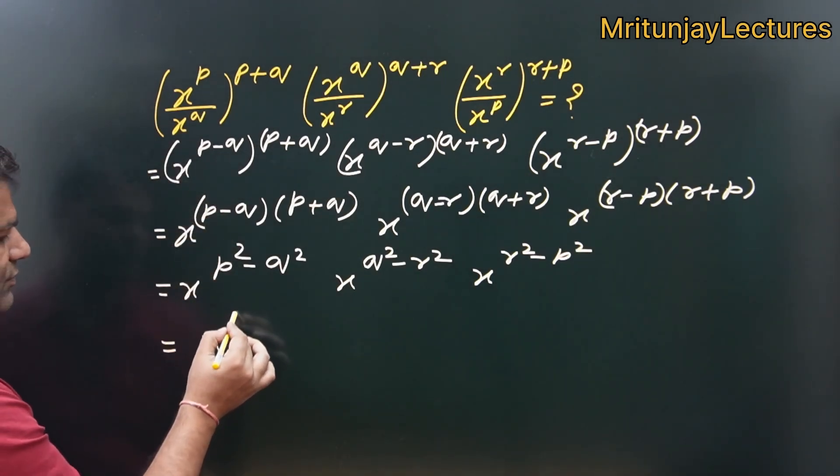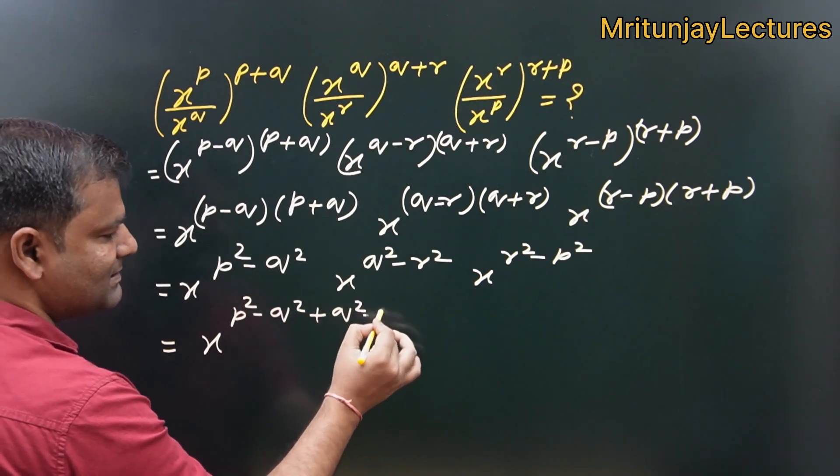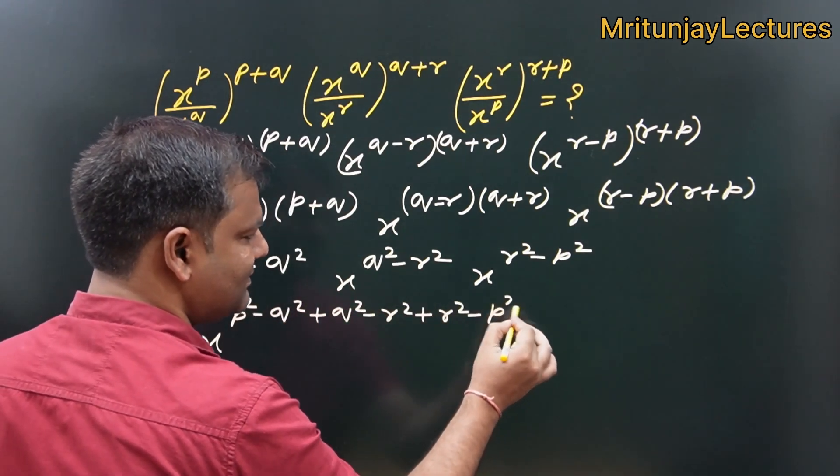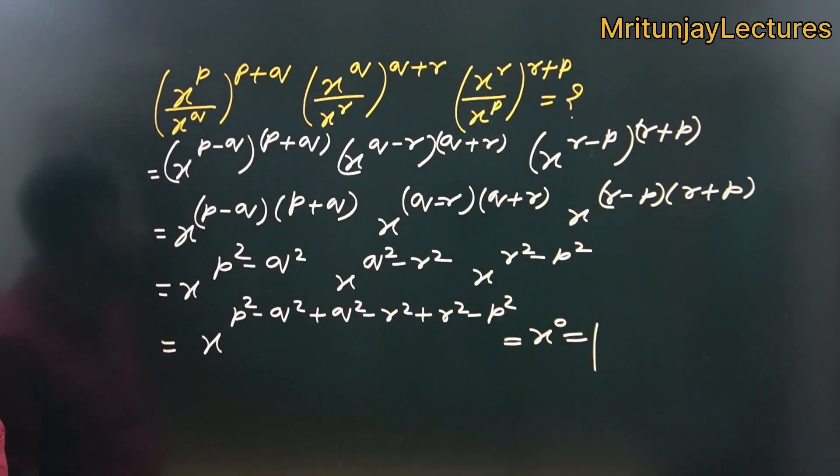Base are same. So, all power adding. So, x to power 0 that is how much? 1 is the right answer.